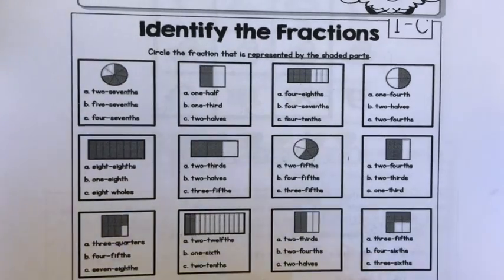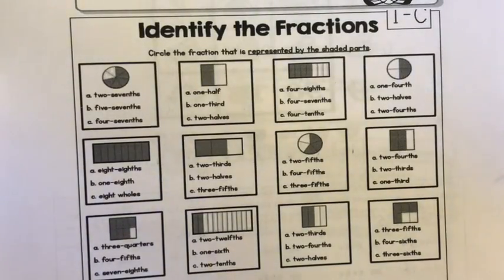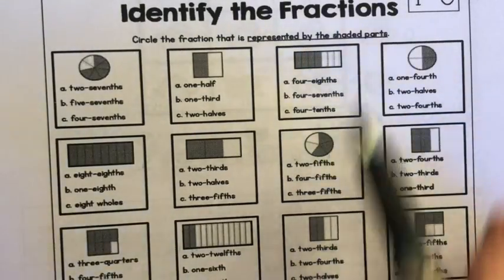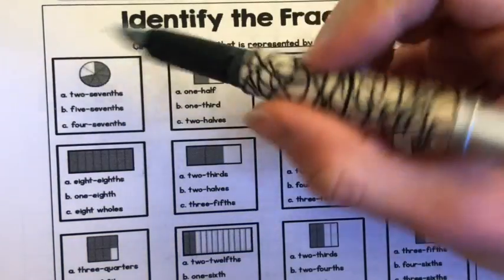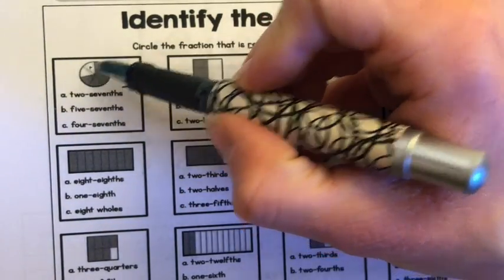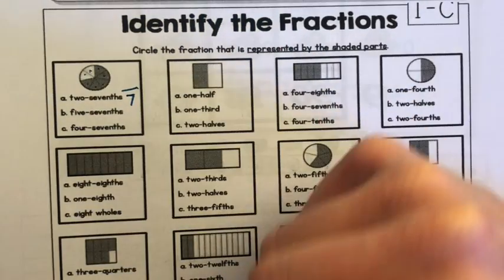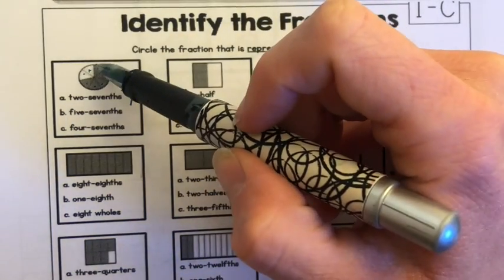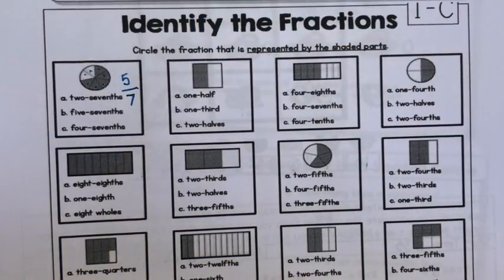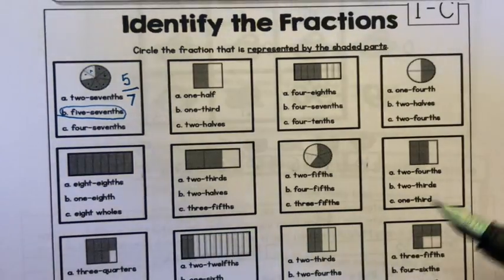Now we're going to move on to identifying fractions. I've heard from a few friends how much you guys are loving the fractions, which is awesome. We're going to work on some fractions as well as our multiplication and division facts. Today we're going to look at circle the fraction that is represented by the shaded part. To do that, we have to find our denominator first. The denominator is the bottom number. Let's count: one, two, three, four, five, six, seven. The denominator is the total number of pieces, not just the ones that are shaded, but the total. There's seven. Now we count how many are shaded. One, two, three, four, five. Five sevenths are shaded. So I would circle five sevenths.